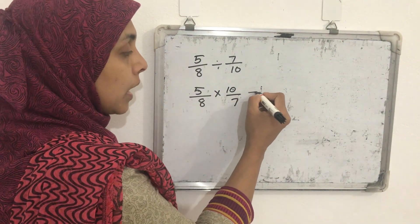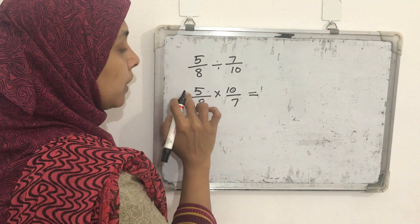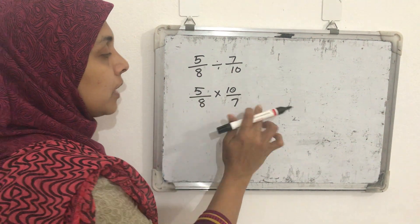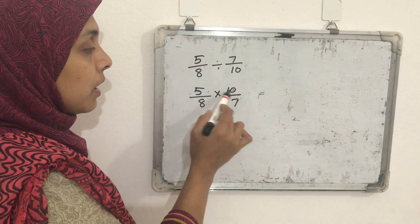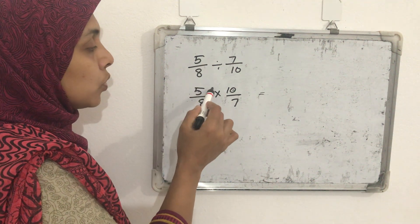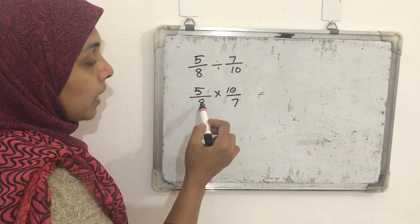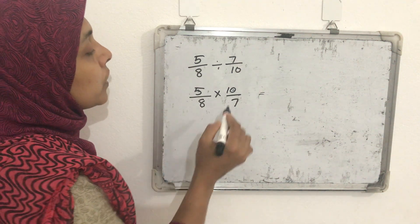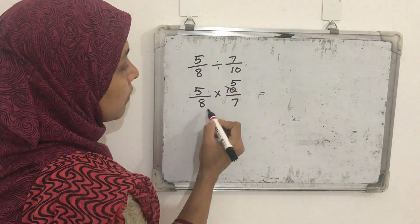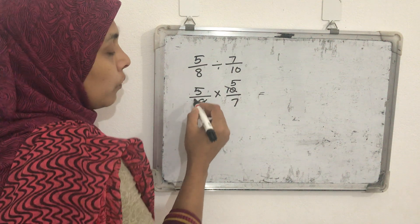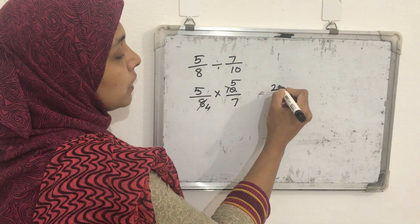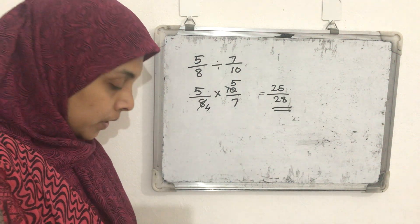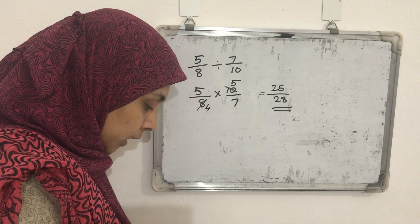Looking carefully, 10 and 8 share the common factor 2. Dividing both by 2 gives 5 and 4. Now multiply the numerators: 5 × 5 = 25. Multiply the denominators: 4 × 7 = 28. So the answer is 25/28.